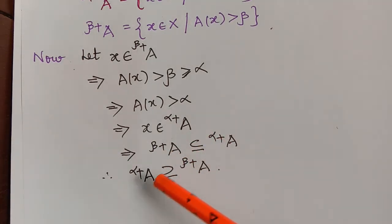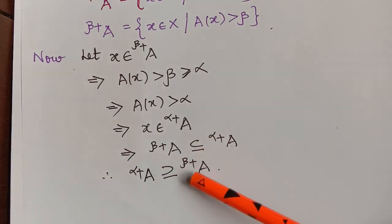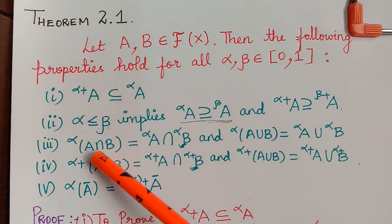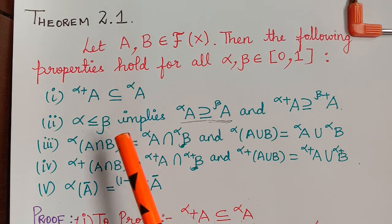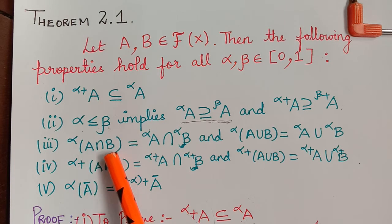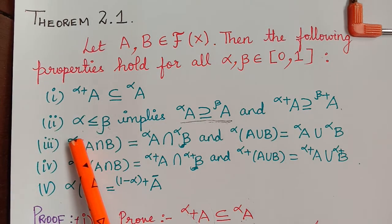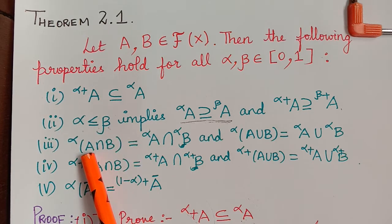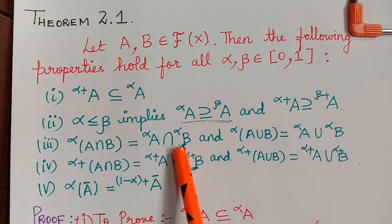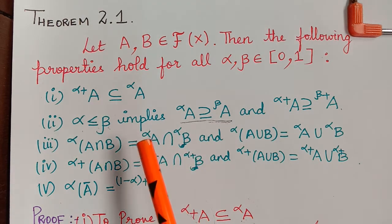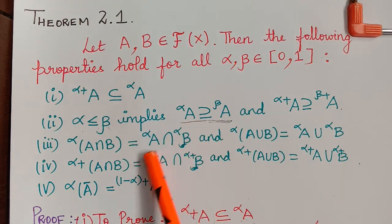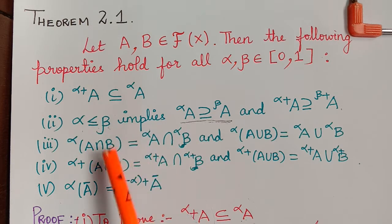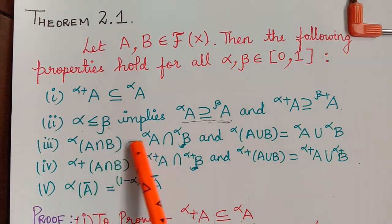We started with X as an element of strong beta cut of A and proved that X is also an element of strong alpha cut of A, which implies that strong beta cut of A is a subset of strong alpha cut of A. So we have proved the second part of subdivision 2. Now next we shall prove the third subdivision. This third property says that the alpha cut of the intersection of two fuzzy sets A and B will be equal to alpha cut of A intersection alpha cut of B.